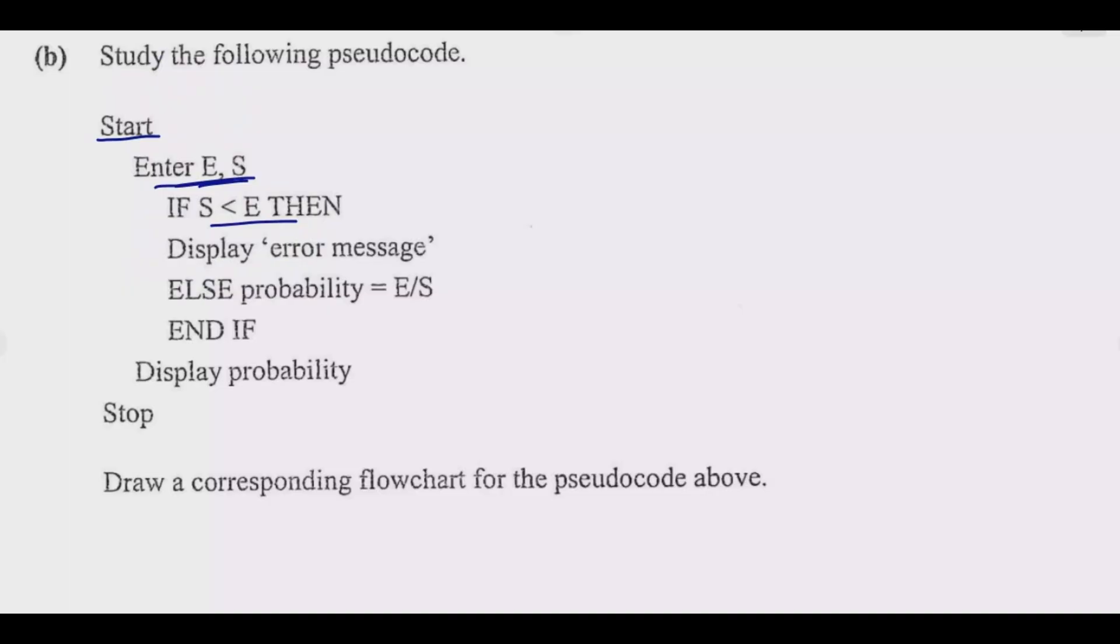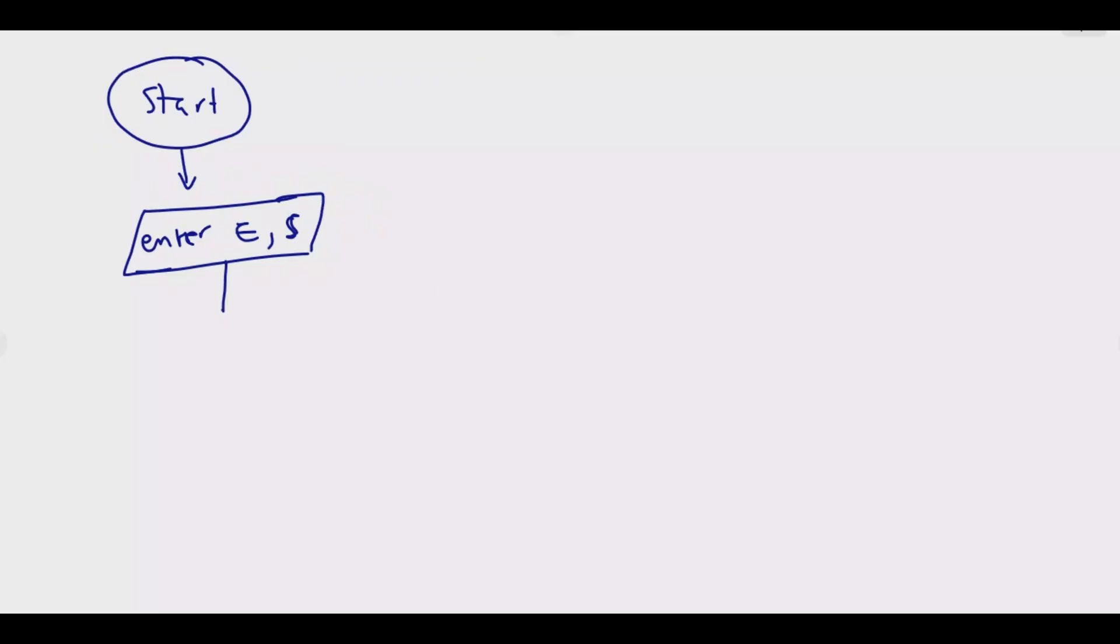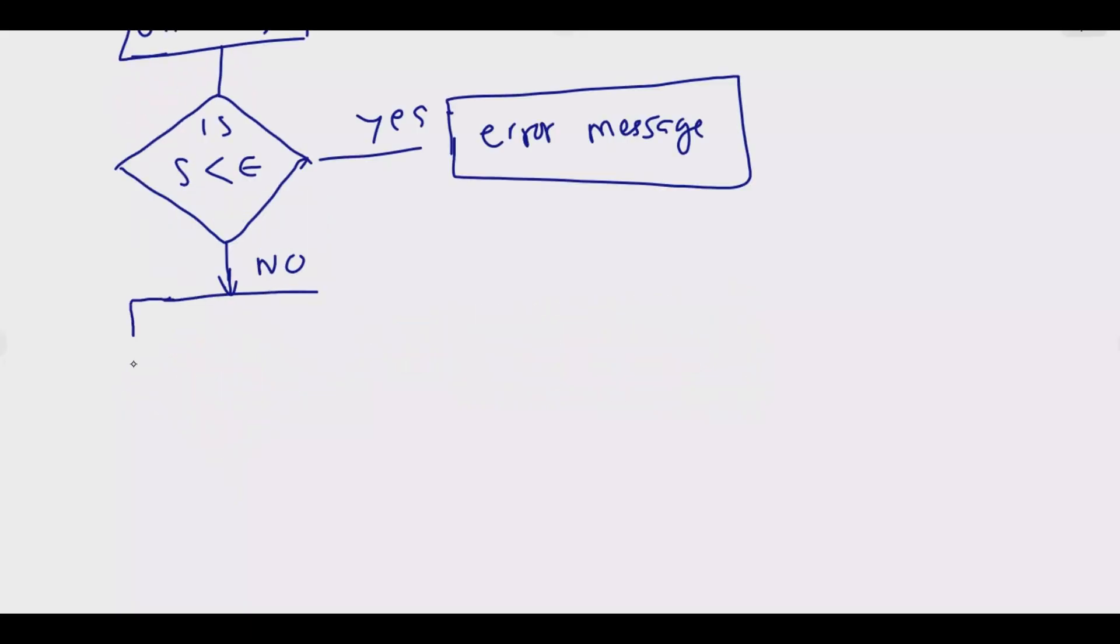Then we need to assess what we're assessing. We need to assess if this is true. So we ask the question using the diamond type of symbol. We say is s less than e. That's the question we need to ask. If the answer is yes, then we need to display error message. If the answer is no, we need to proceed and calculate the probability.